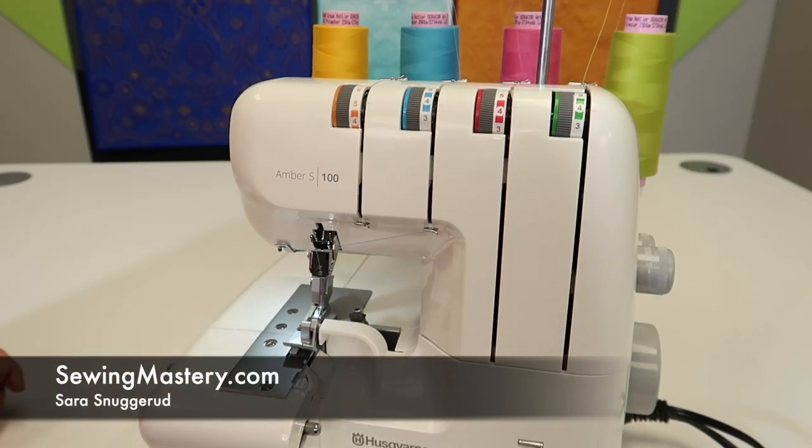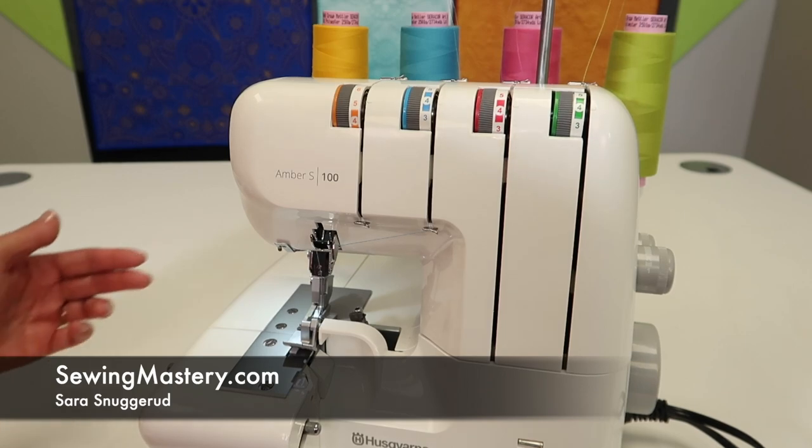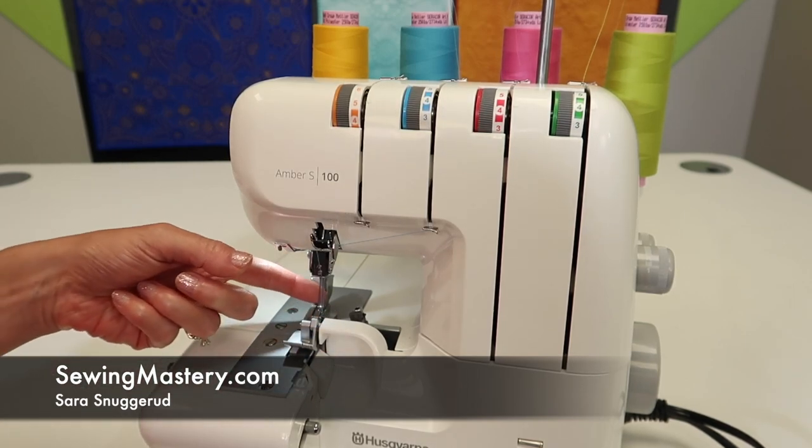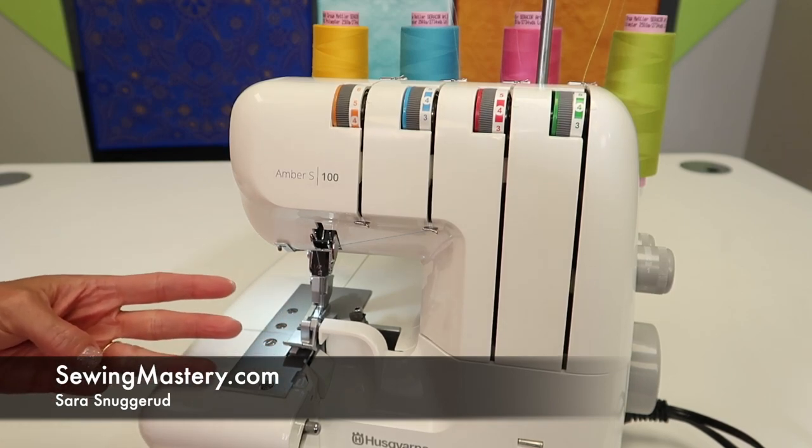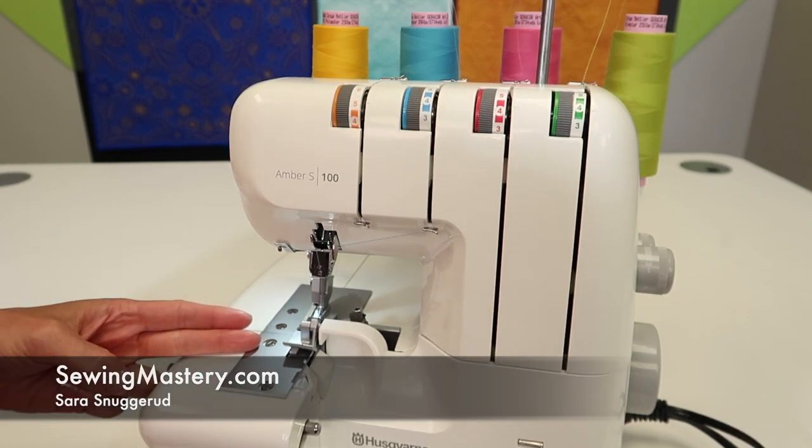Have you ever wondered what a two-thread overlock edge or a two-thread rolled hem is all about? I mean, traditionally you have two loopers and a needle at least, so that's three. How do we actually get our serger to work with just two threads?